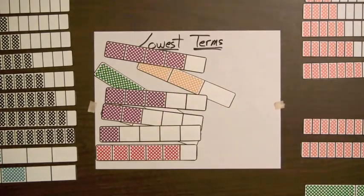Now, one thing students might notice is that the lowest terms pile contains all the yellow, green, and purple bars.